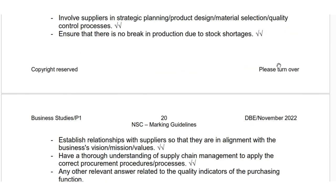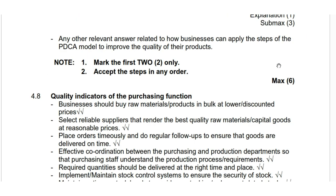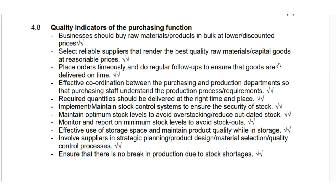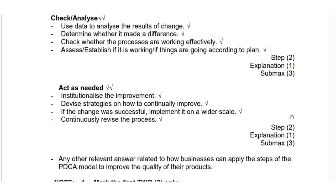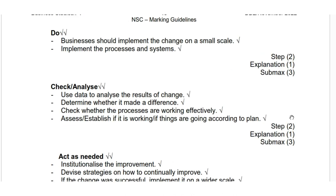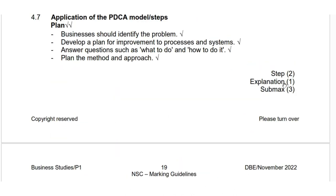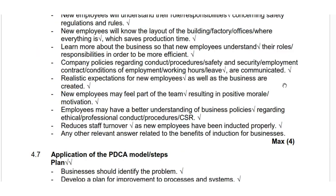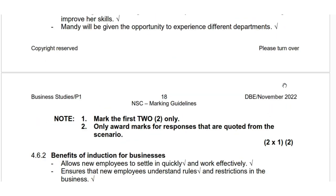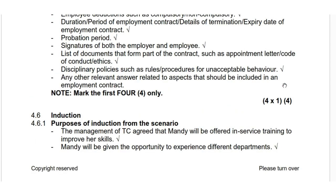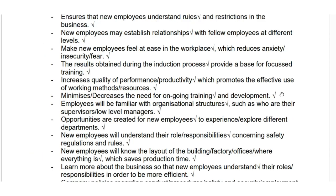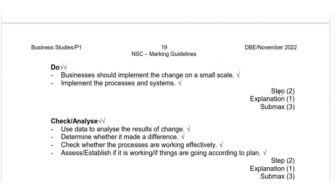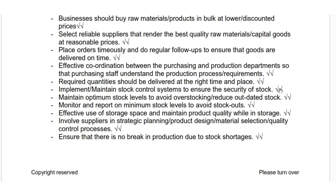Next tip: if the question requires six facts, don't waste your time giving eight because they will mark the first six and ignore the extra two. For example, if asked to name any three examples of fringe benefits and you give six where the first three are wrong and the last three are correct, you will be awarded zero marks because they mark only the first three. Remember, time in an exam is of huge importance — don't spend time on points that won't be considered. This applies only to questions where the number of facts is specified, and also to responses in section C where applicable.